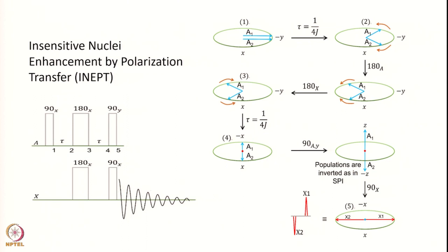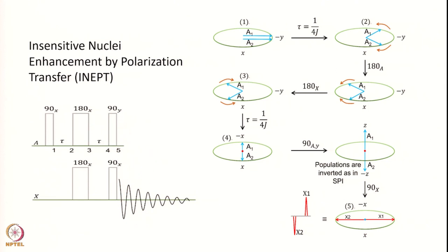Now let us analyze how this works. Basically, if you recall the spin echo experiment: 90 — tau — 180 — tau — this is the spin echo sequence. At the end of this 2 tau period we have the echo appearing, and then you apply the 90-degree pulse on both channels — the A channel and the X channel — to transfer magnetization from the A spin to the X spin. Let us assume we sit on the rotating frame of the A spin. These are the time points 1, 2, 3, 4, 5.